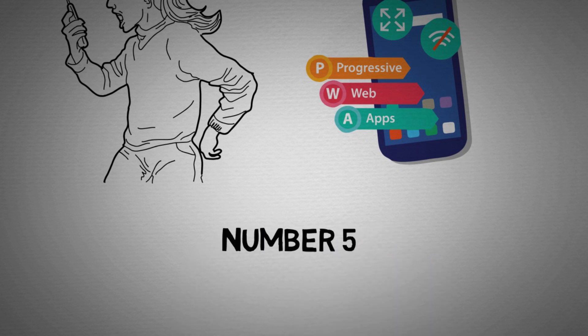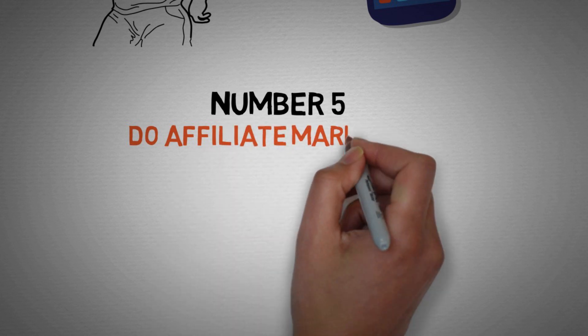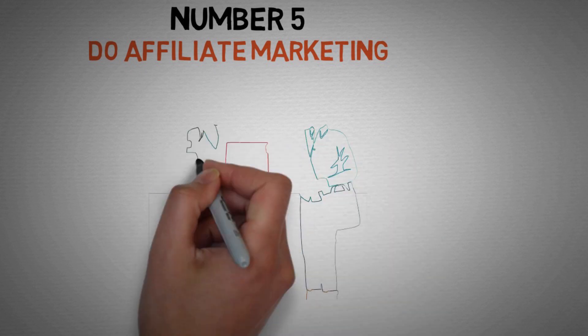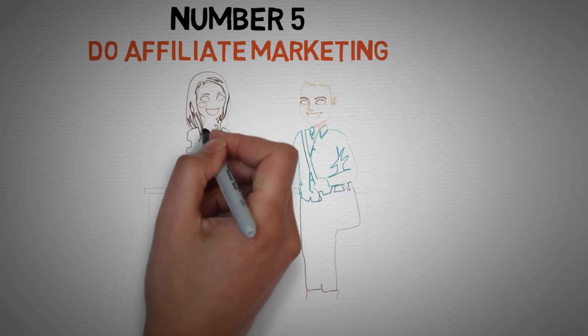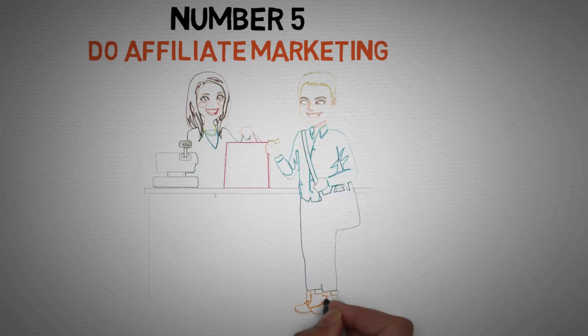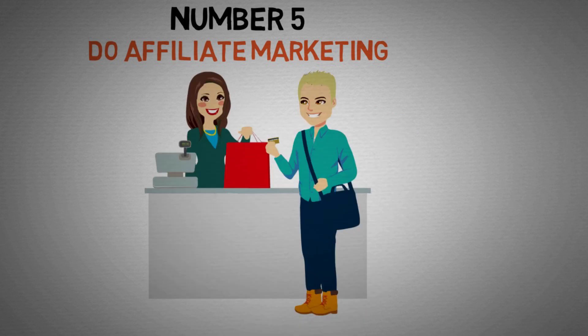Number 5: Do affiliate marketing. Affiliate marketing is simple. It's when you recommend a product and when some other persons buy it, you end up getting a commission. If you have any of the above listed platform, blog or YouTube channel, you can recommend other people's products, sell them and earn commission doing so.